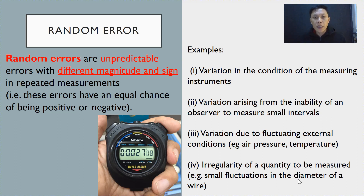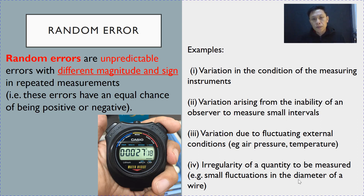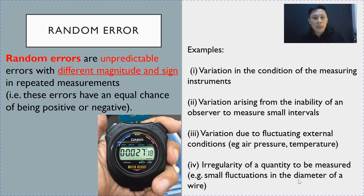Examples of random error include variation in the condition of the measuring instrument, and variation arising from the inability of an observer to measure small intervals — for example, human reaction time and inconsistency in starting and stopping a stopwatch. Other examples include fluctuating external conditions like temperature or air pressure, and in some cases, the quantity that you are supposed to measure itself will have irregularity, causing random results.